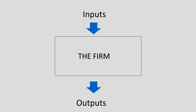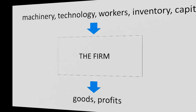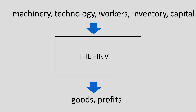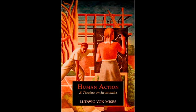In neoclassical economics, the firm is treated almost like a black box. There are inputs and there are outputs. The inputs might be machinery, technology, workers, inventory, capital. The outputs are goods and profit. However, as Ludwig von Mises reminds us, economics is not only the study of resource allocation, it is also the study of human action.